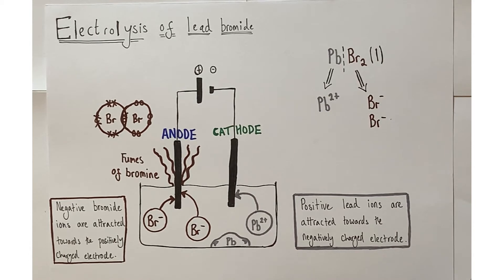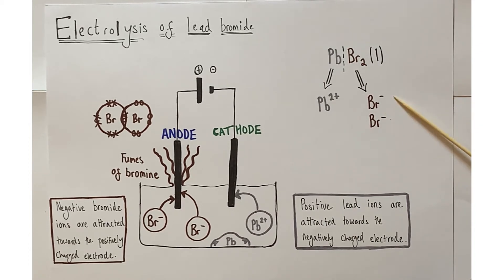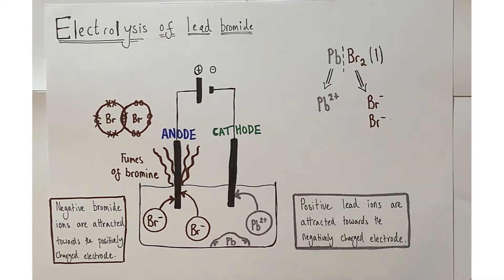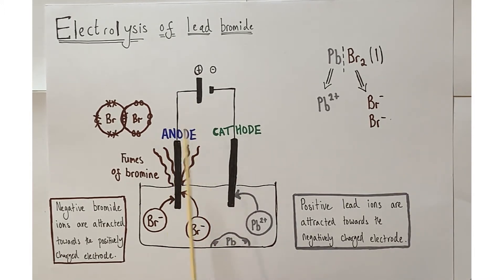Electrolysis will only work once the giant ionic structure has been melted. Bromine is a Group 7 element, meaning there are seven electrons in the outer shell of any bromine atom. When bromine forms ions, it gains one electron into that outer shell, giving it a charge of minus one. The formula is PbBr₂, so there are two mono-negative bromide ions, meaning the lead ion must have a charge of Pb²⁺ to balance those two negative charges.